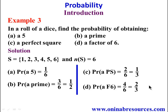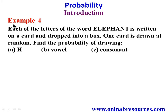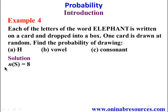Example 4: Each of the letters of the word ELEPHANT is written on a card and dropped into a box. One card is drawn at random. Find the probability of drawing A) H, B) a vowel, C) a consonant. In our solution, n(S) = 8, since ELEPHANT has 8 letters. For part A, there is only one H, so the probability of getting H is 1/8.